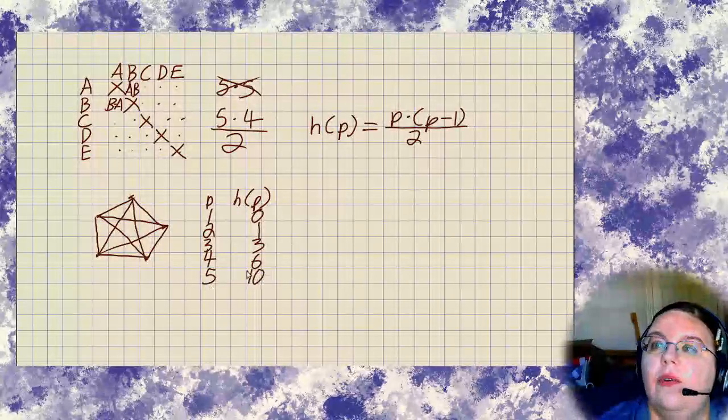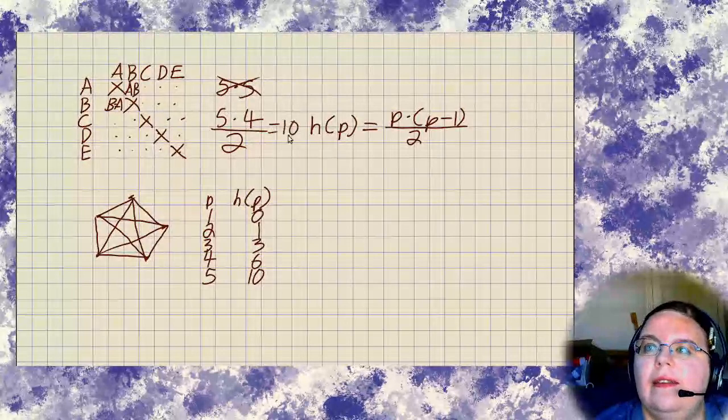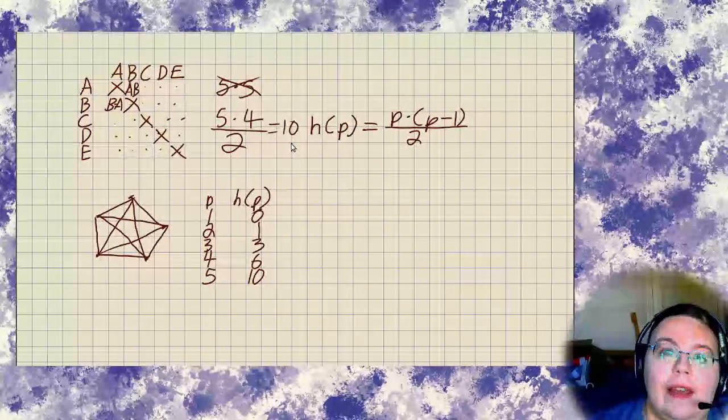Which you might notice is the exact same thing we would get by saying, okay, five times four is twenty, divided by two is ten. So these methods agree, and that's good.